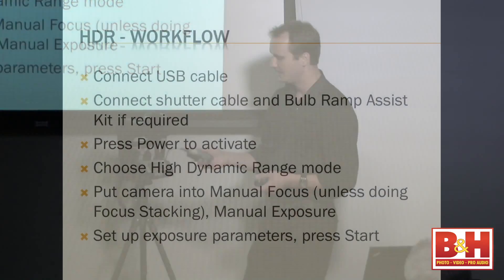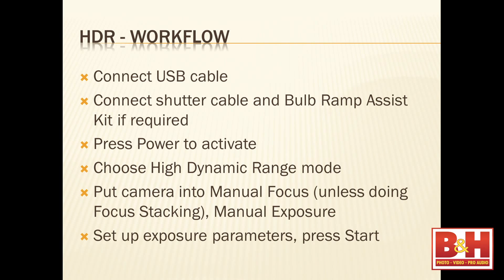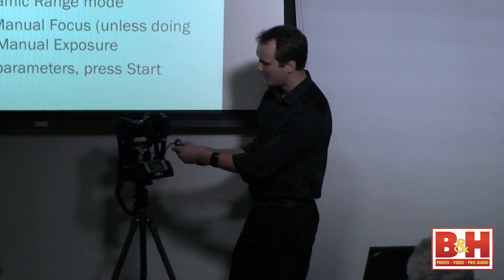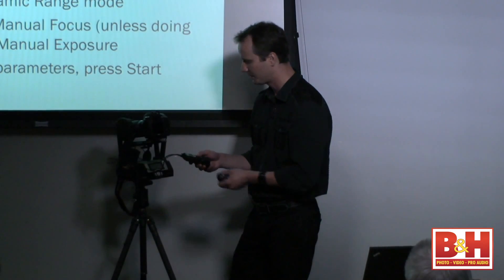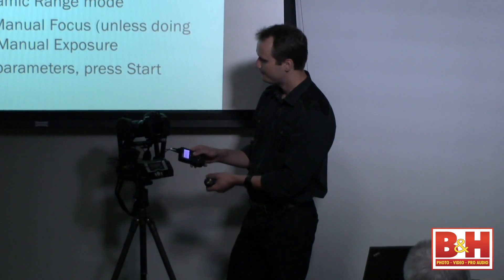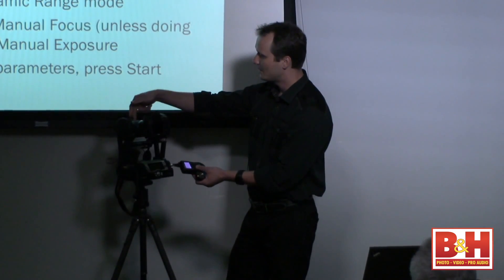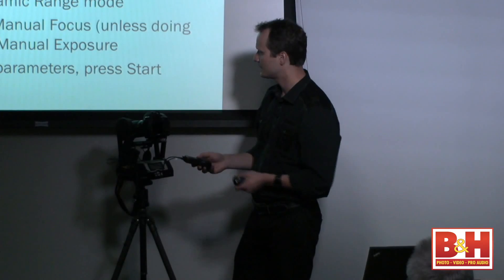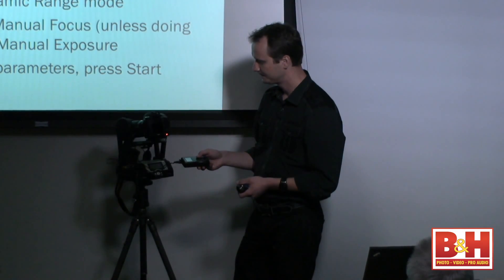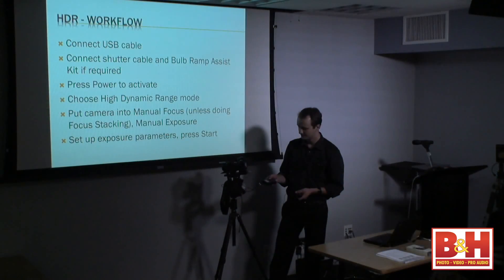So for HDRs it's a pretty easy thing to do. You connect the USB cable, it comes with Promote Control of course, connect it to the camera. Turn the camera on. Connect the shutter cable if you have it, it's an optional accessory. HDRs are done faster with it, and of course B&H carries both of these things. Press power to fire it up, choose high dynamic range mode. Put your camera in manual focus and manual exposure so we can control shutter speeds, and just press start.